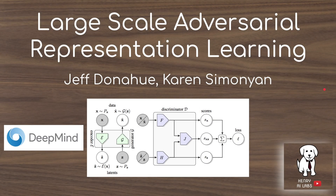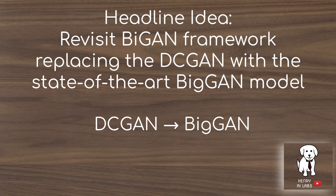This video presents an interesting paper on using GANs for representation learning from Google's DeepMind Research Lab. The headline idea is that they're going to revisit the BiGAN framework, but replace the low-capacity DCGAN model from 2014-2015 with the state-of-the-art in 2019: the BigGAN model.